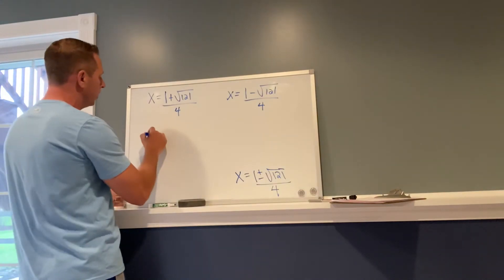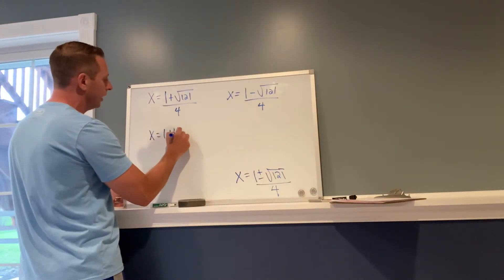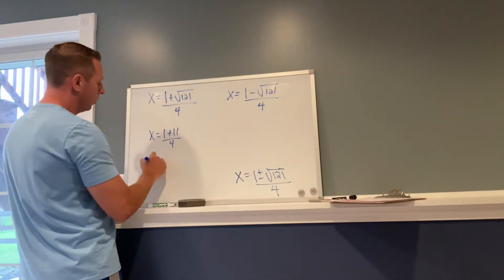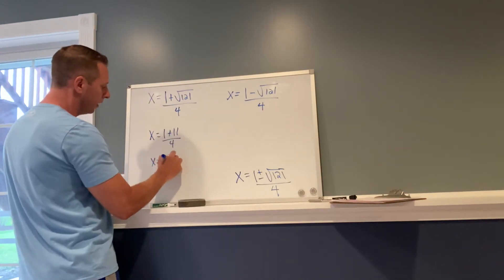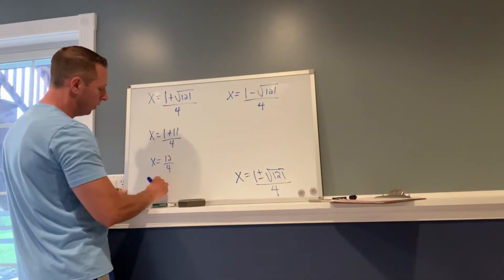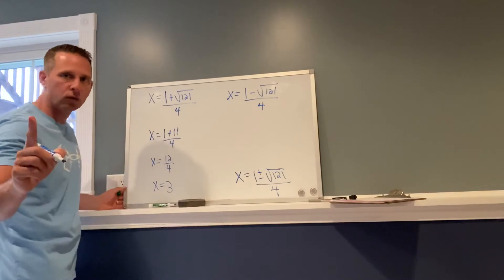11 times 11 is 121. So this is 1 plus 11 divided by 4, which is 12 divided by 4, which equals 3. That's one solution.